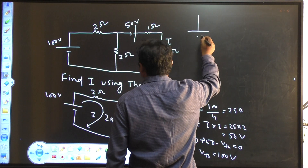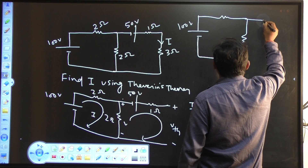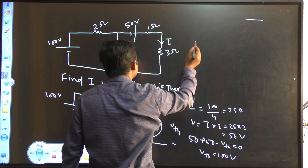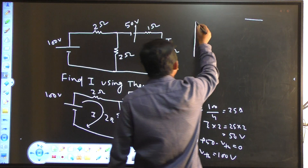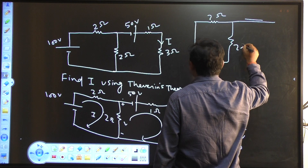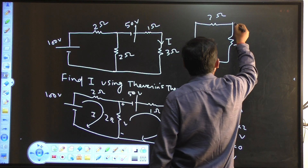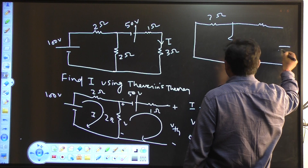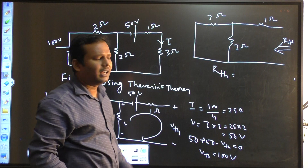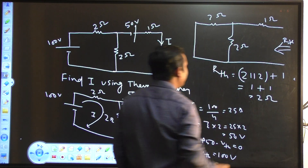No current is flowing through this 1 ohm resistor, but your 50 volt is present, so this Vth will be 100 volt. For Rth, I have to see from this terminal — the circuit has 100 volt source, 2 ohm, 2 ohm, 2 ohm. I have to short this 50 volt and also short this 100 volt. By finding Rth you have to short all the independent voltage sources. Then your 2 ohm and 2 ohm are connected in parallel, which is in series with the 1 ohm. So 2 parallel to 2 gives 1 ohm, in series with 1 ohm, so your Rth is 2 ohm.